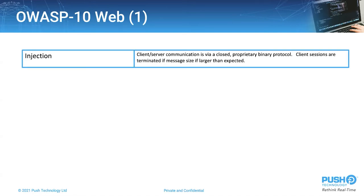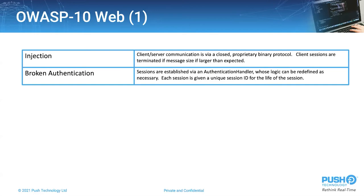The first vulnerability is injections. Client-server communication is via a closed proprietary binary protocol. If a message is too large, the session is immediately terminated. So there is no possibility of injections between Diffusion servers and clients. Broken authentication: we've mentioned the authentication handler whose logic is defined by our clients. Every session is given a unique ID for the life of the session, and sessions can be controlled and terminated from the server if needed.